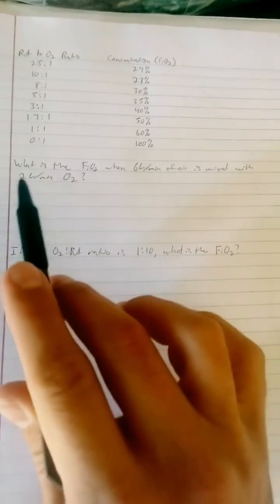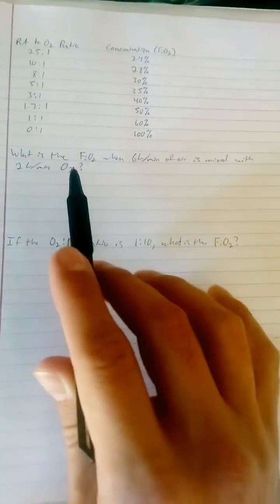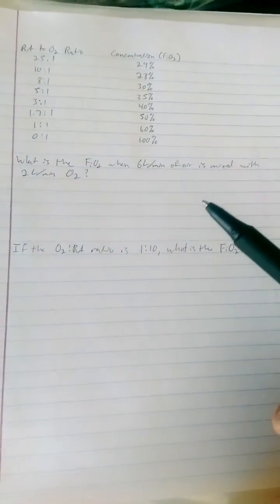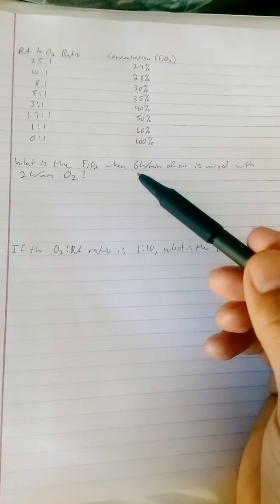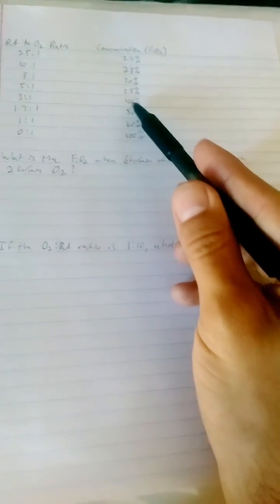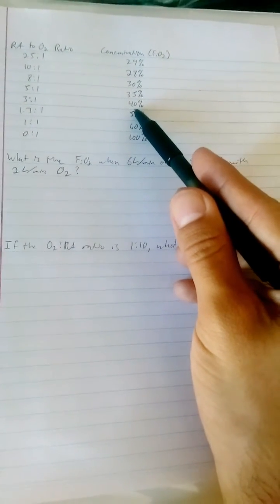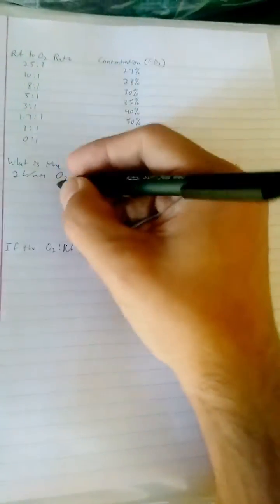This first question says, what is the FiO2 when 6 liters of air is mixed with 2 liters of O2? Well, we could deduce that a 6 to 2 ratio is a 3 to 1 ratio. The answer is 40 percent. So if you know this chart, you can figure this out fairly quickly. If you don't know the chart, there is a trick.